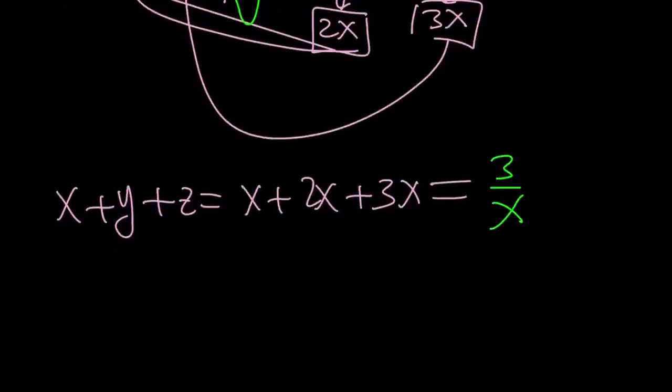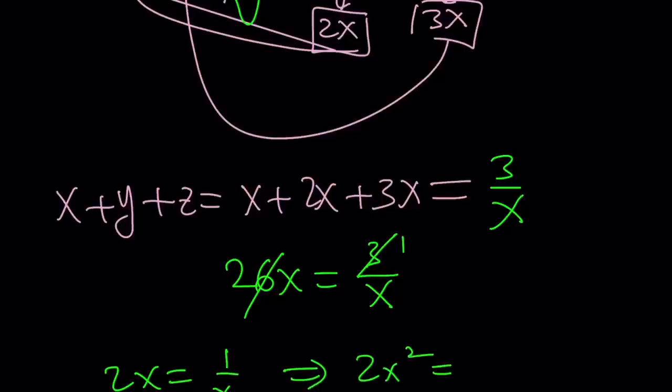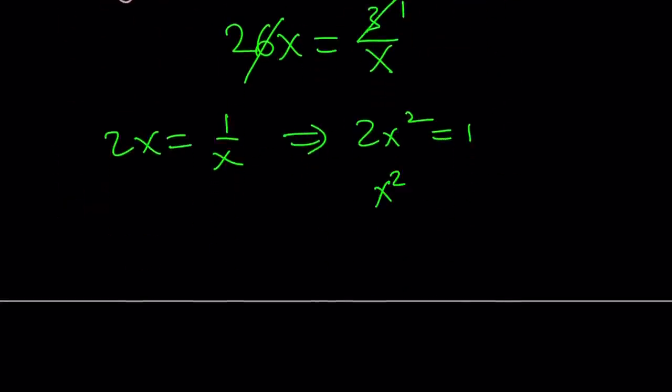x plus 2x plus 3x is 6x equals 3 over x. Cross multiply. First cross cancel, maybe. 2x equals 1 over x. And then cross multiplication gives you 2x squared equals 1, and x squared equals 1 half. I told you x, y, z are not integers.